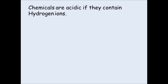Chemicals are termed acids when they contain what's called a hydrogen ion. The hydrogen ion is like a hydrogen atom but with a charge — it is positively charged, which is why we have H+.